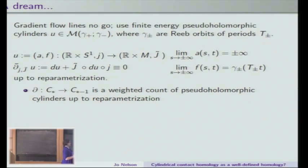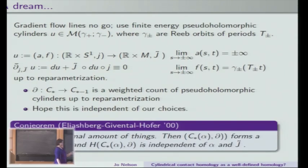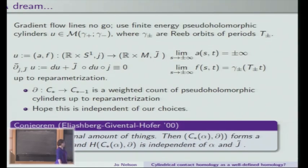The differential is going to be a weighted count of pseudo-holomorphic cylinders up to reparametrization. Already in Morse theory the analogy starts to break down because not only do we have these pseudo-holomorphic things, we're doing a weighted count of Reeb orbits and pseudo-holomorphic curves interpolating between them — so we don't really have a manifold we're working with. At the end of the day, we hope this is independent of all the choices we made: the choice of complex structure J-twiddle, the choice of reparametrization, and also the choice of the contact form that gives us the Reeb vector field. This is addressed in a very celebrated paper by Eliashburg, Givental, and Hofer, where they sketch what symplectic field theory is supposed to be — it's a conjecture.